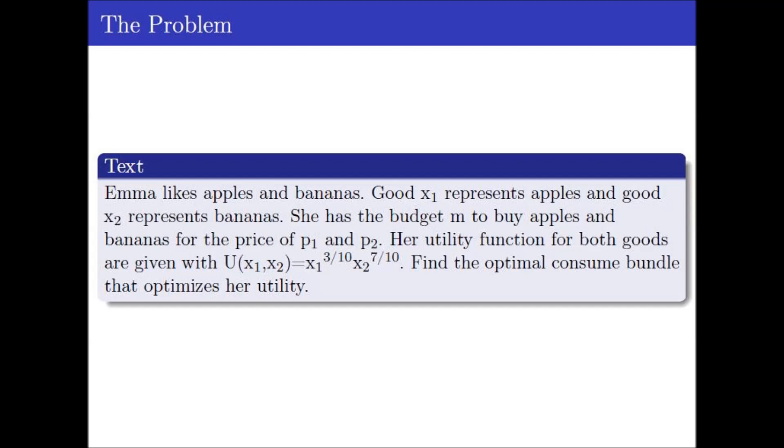Emma likes apples and bananas. Good x1 represents apples and good x2 represents bananas. She has the budget M to buy apples and bananas for the price of p1 and p2.